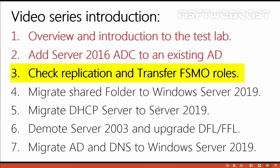Hello everyone and welcome to the third part of this video series. In the first video, we saw the overview of the test lab created in a Windows Server 2003 Active Directory environment. In the second video, we added Windows Server 2016 as an additional domain controller to our existing Windows Server 2003 Active Directory forest. Now in this video, we are going to check replication between both domain controllers and, if replication is happening successfully, transfer FSMO roles from Windows Server 2003 to Windows Server 2016 — promoting it to act as the root domain controller for mylab.local domain.